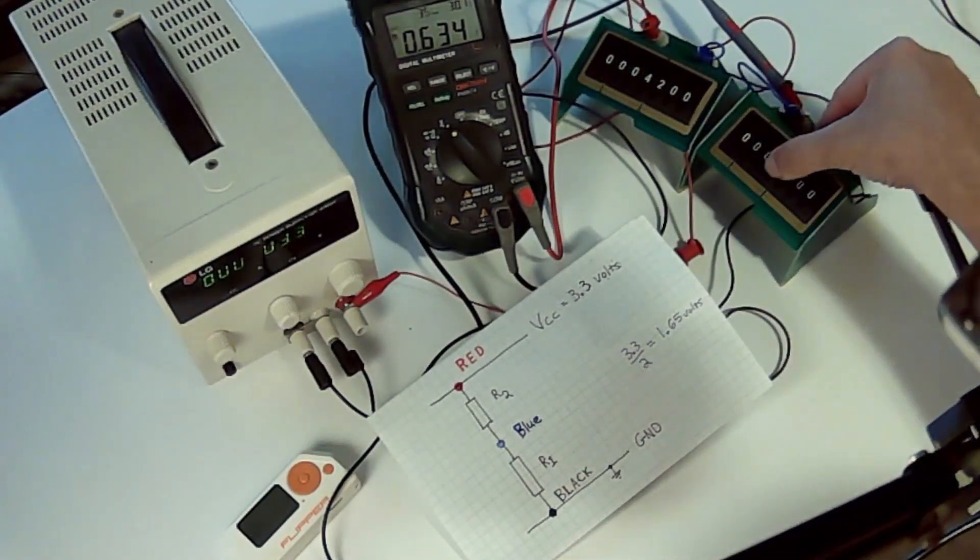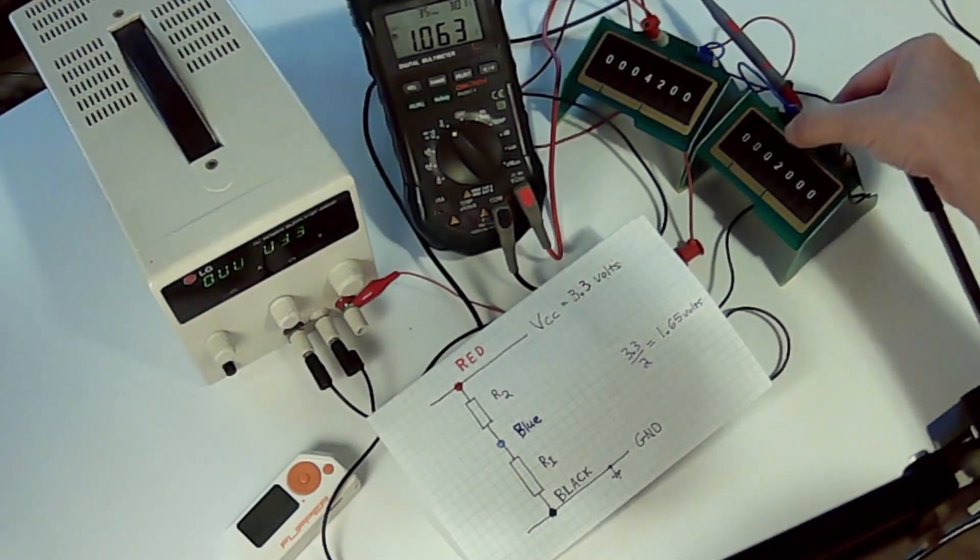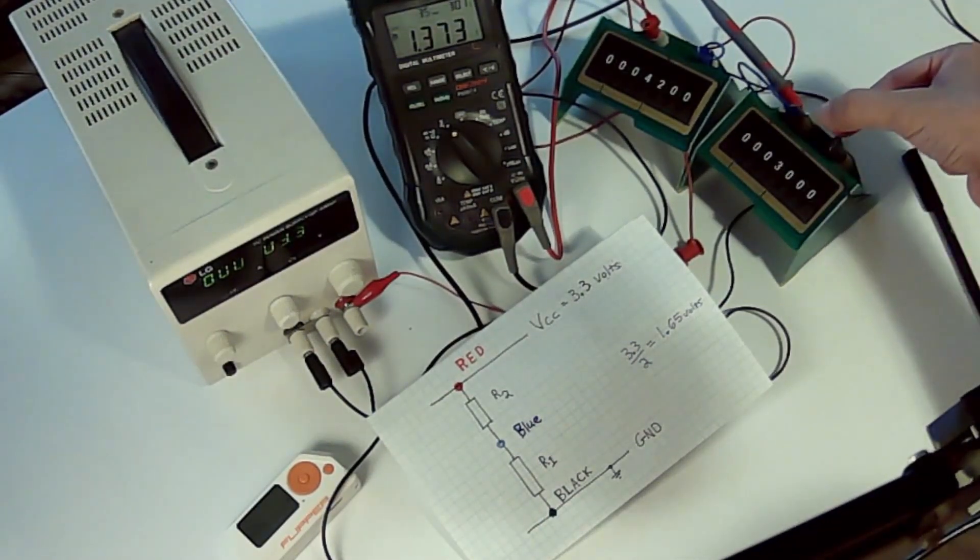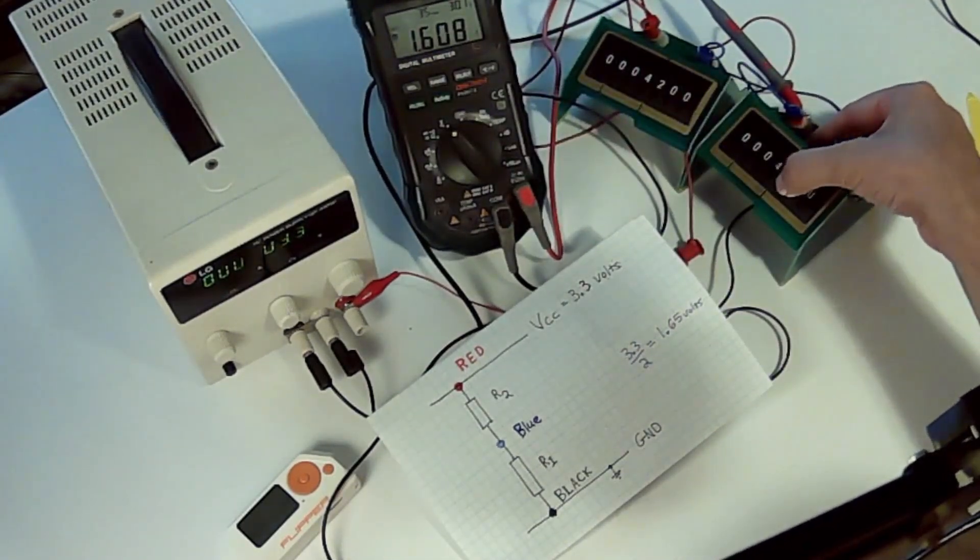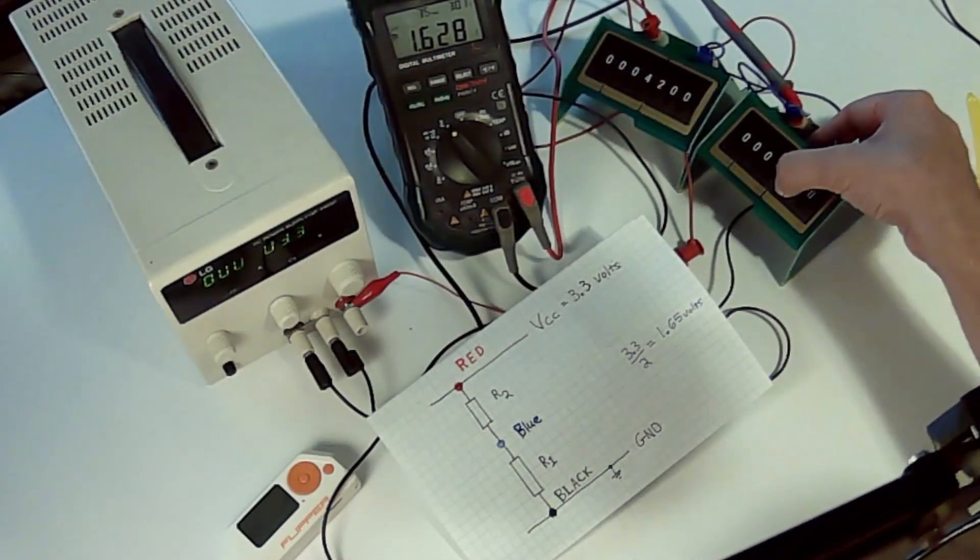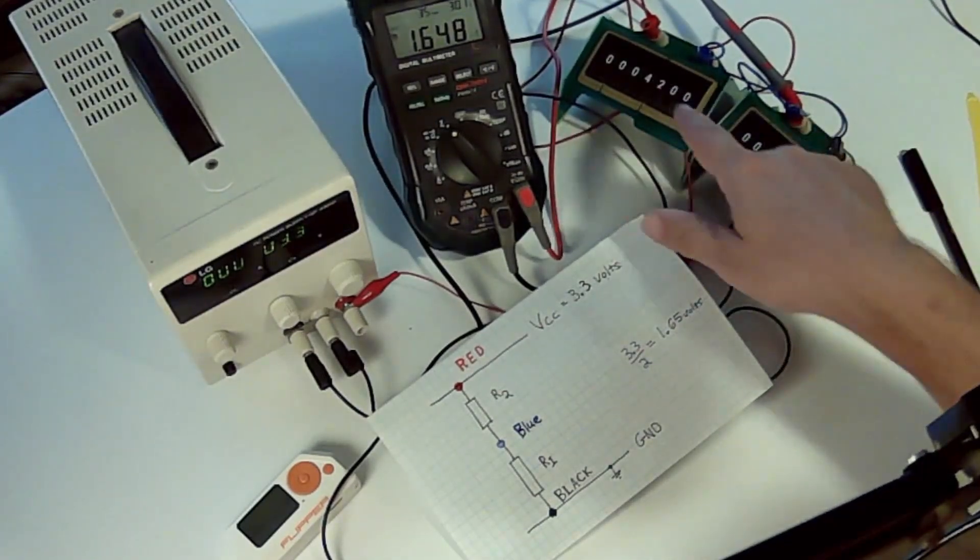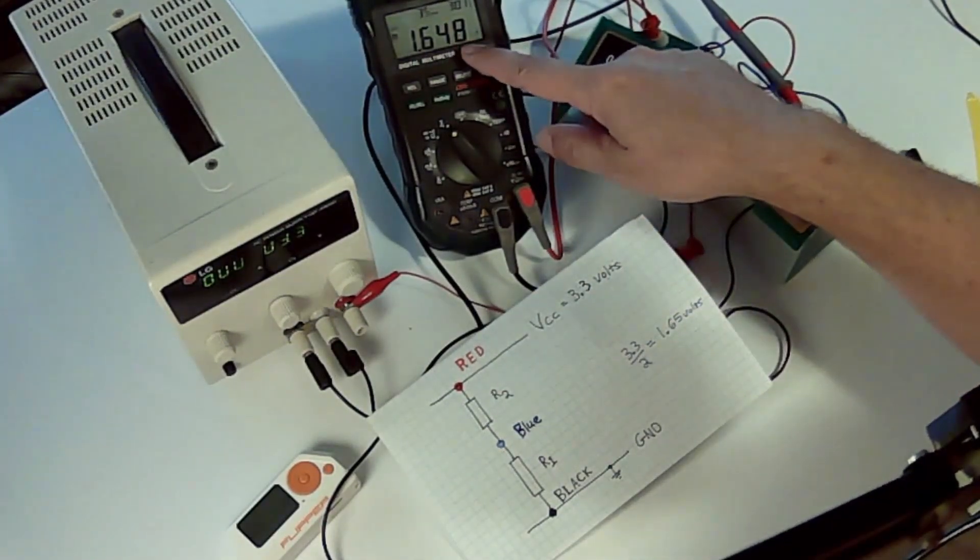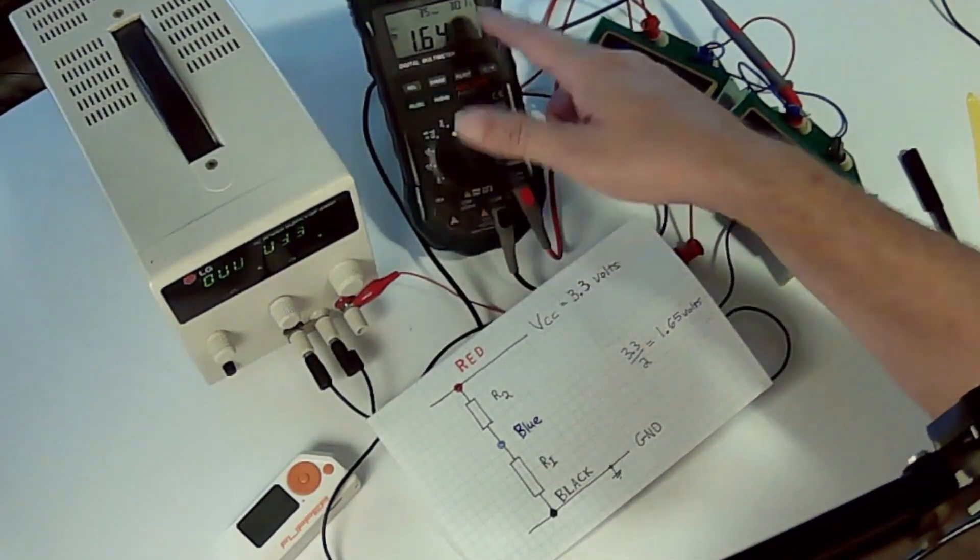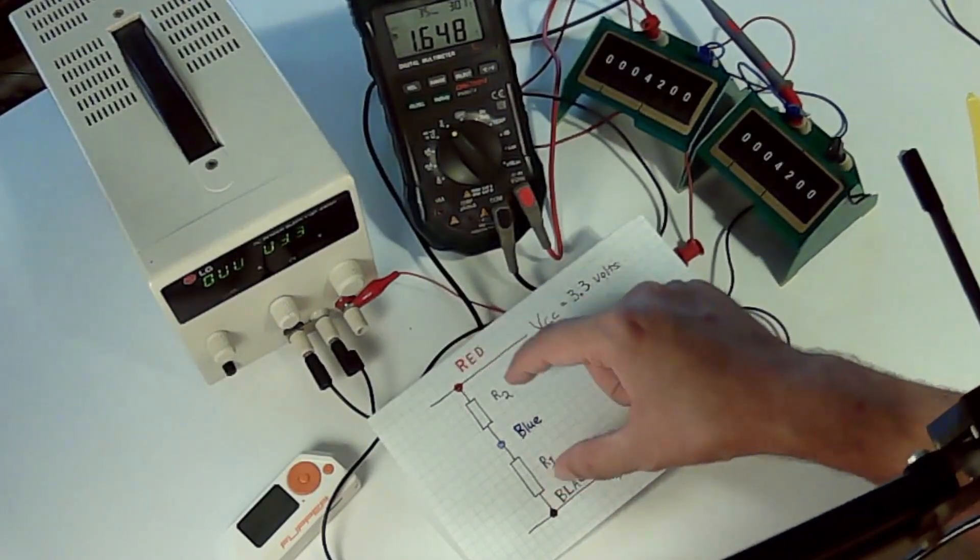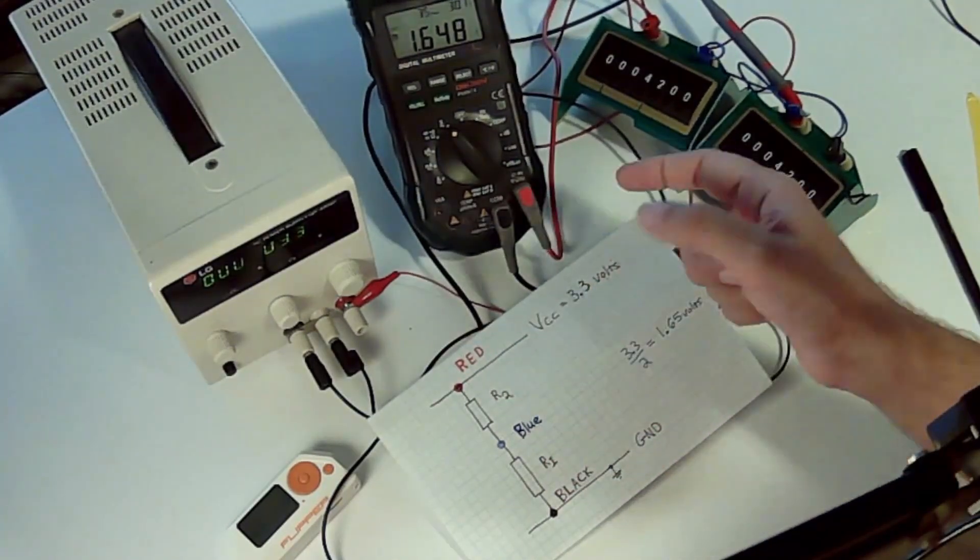There's a property that when these resistors are equal, as I'm moving it up you can see the voltage is increasing. Now those two resistors are equal and you can see the voltage is half of 3.3 volts, or 1.65. So when the two resistors are equal, the voltage is half.